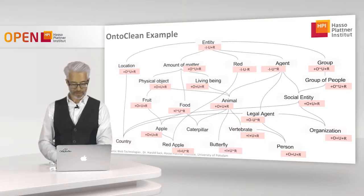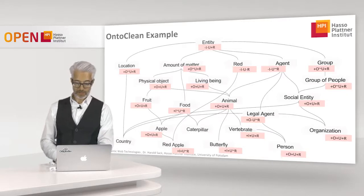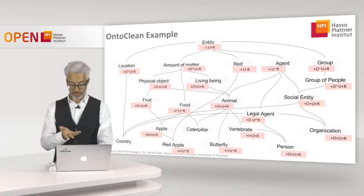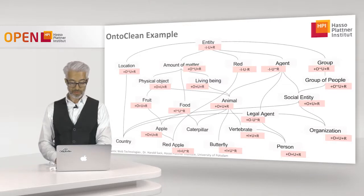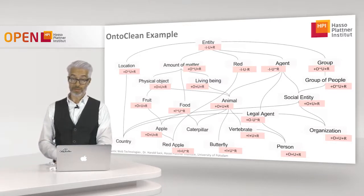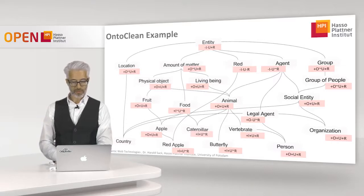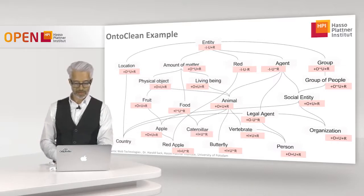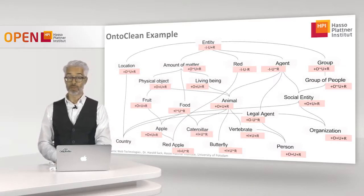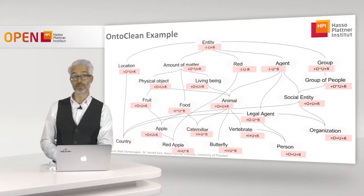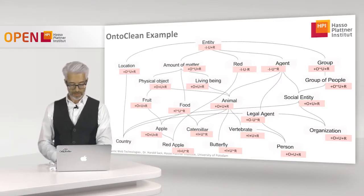For 'butterfly': it inherits the species name from animal and is considered a whole. However, being a butterfly is only a phase in the living sequence of that animal — previously it was a caterpillar. Therefore both caterpillar and butterfly are non-rigid, because if the caterpillar ceases to exist as such, it becomes a butterfly.